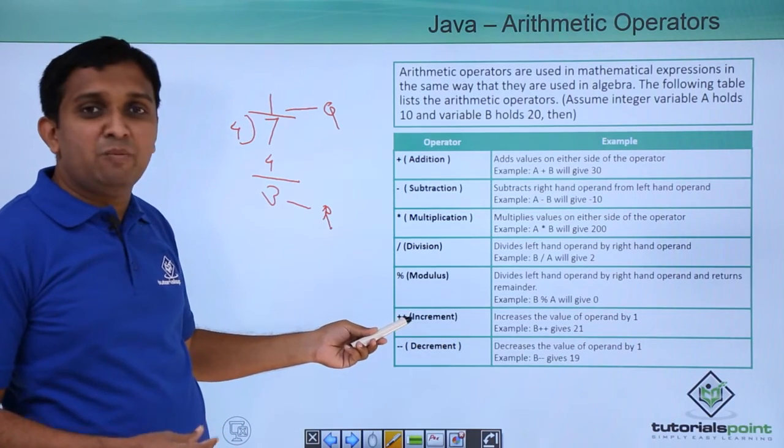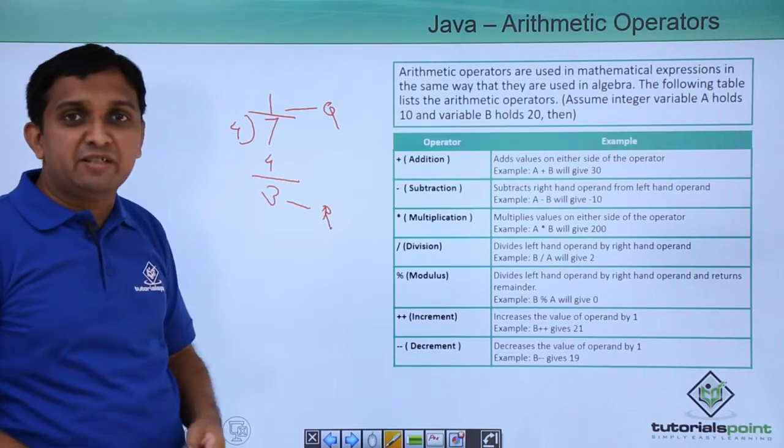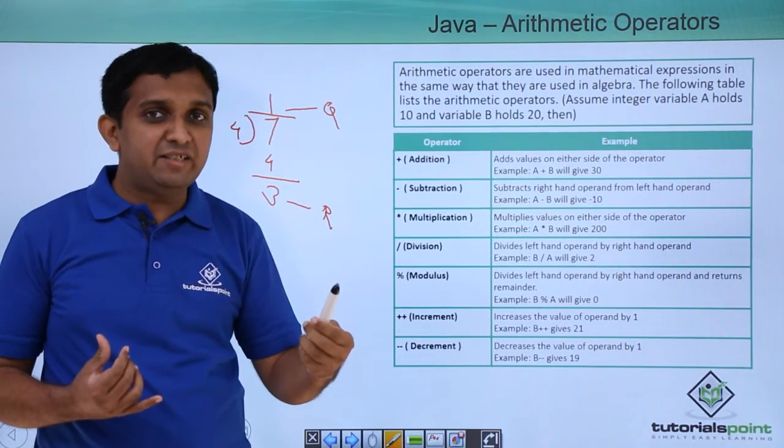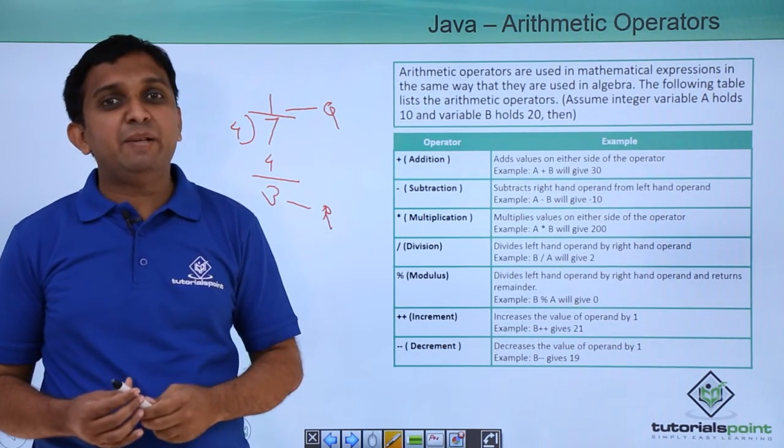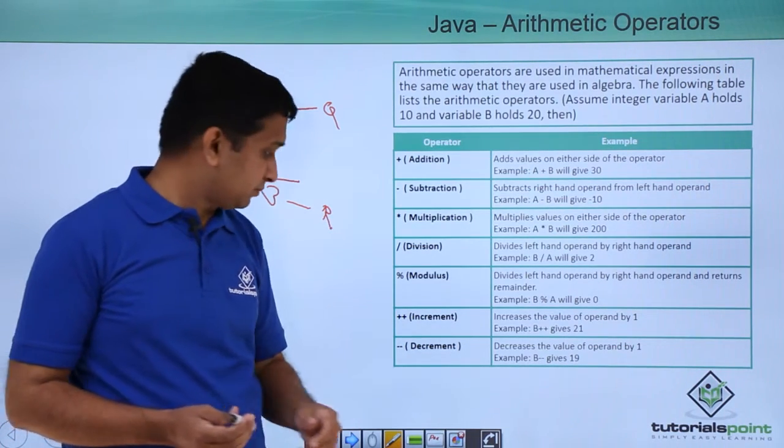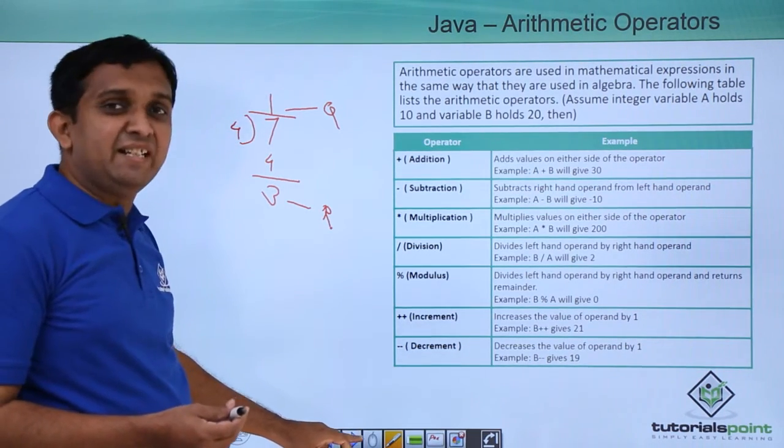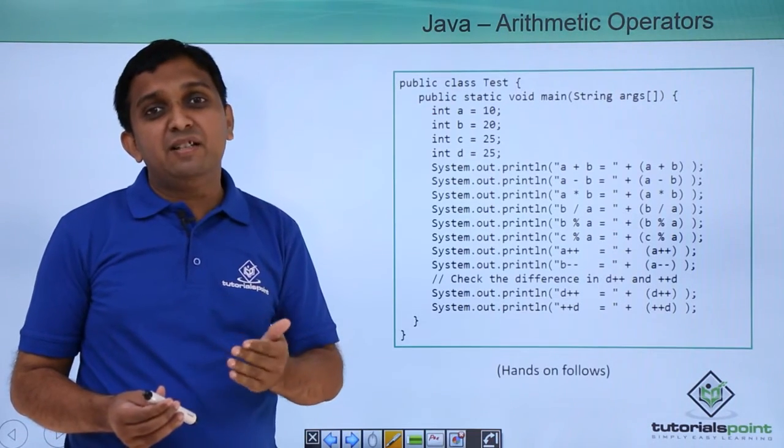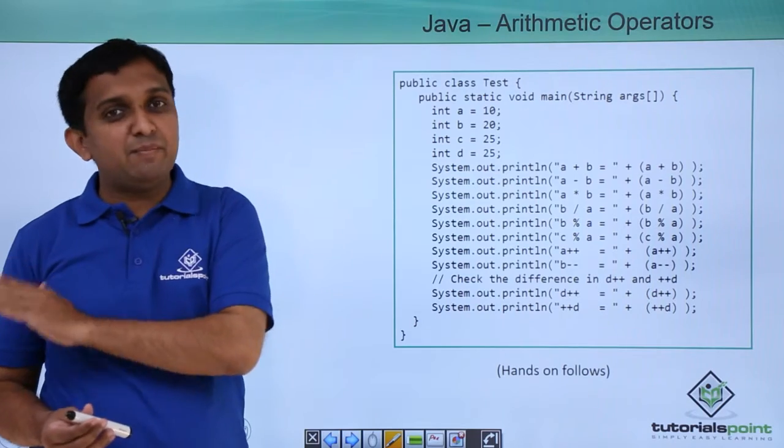Then increment operator and decrement operator are there. Increment operator will increment the value of the integer by 1, and decrement operator will decrement the value of the integer by 1. Again, there are two types: pre-increment and post-increment, and similarly pre-decrement and post-decrement.